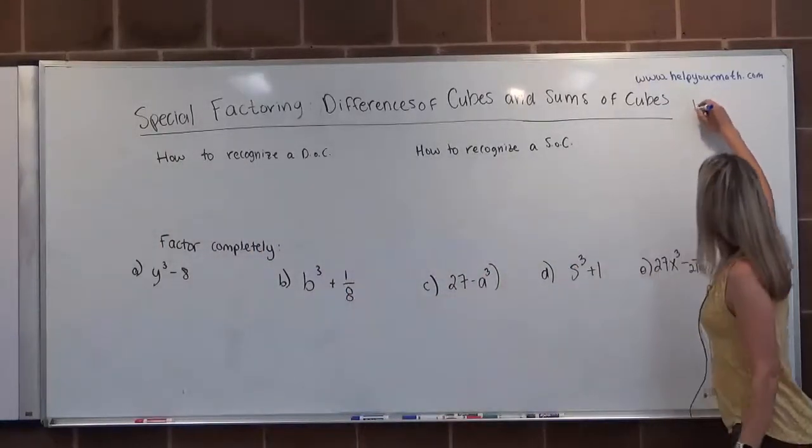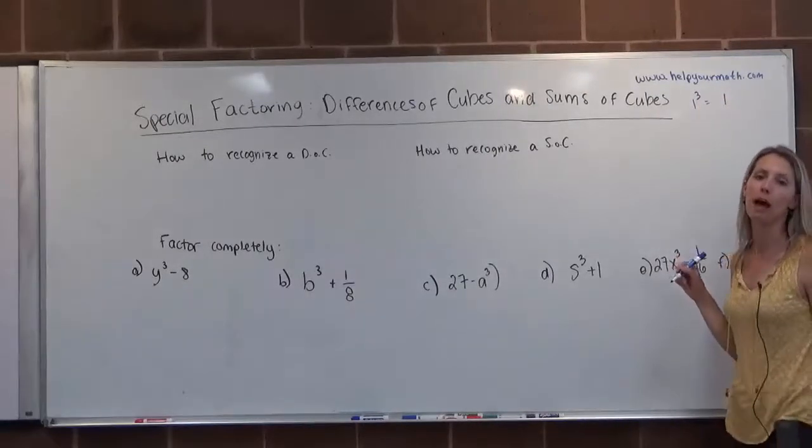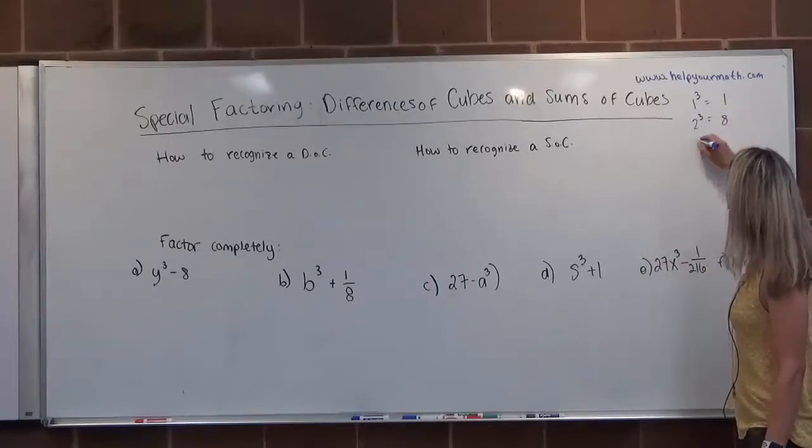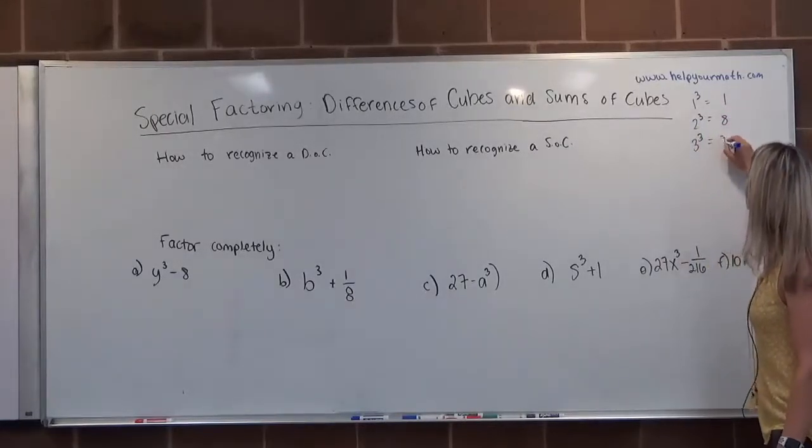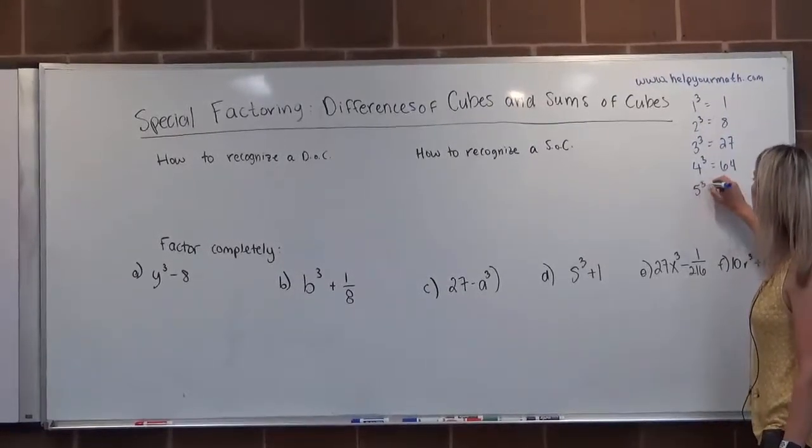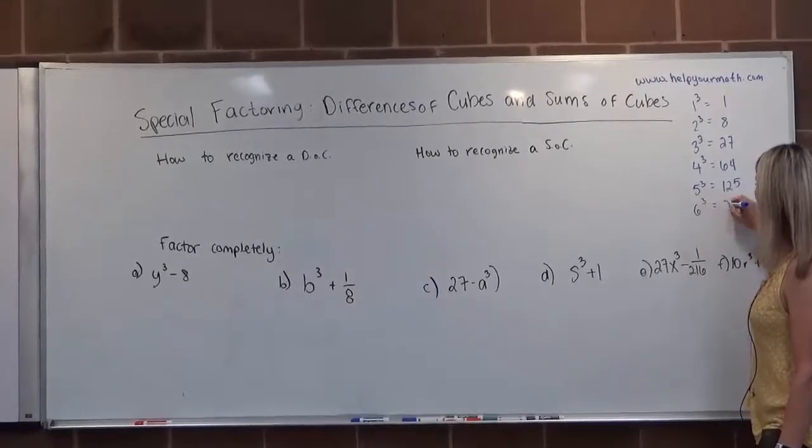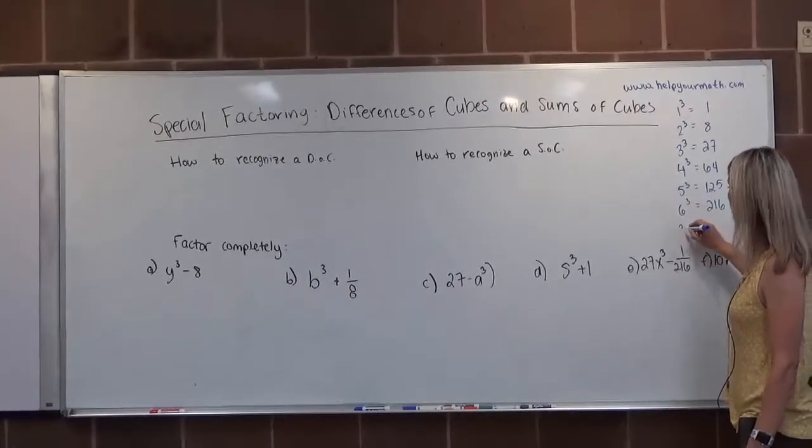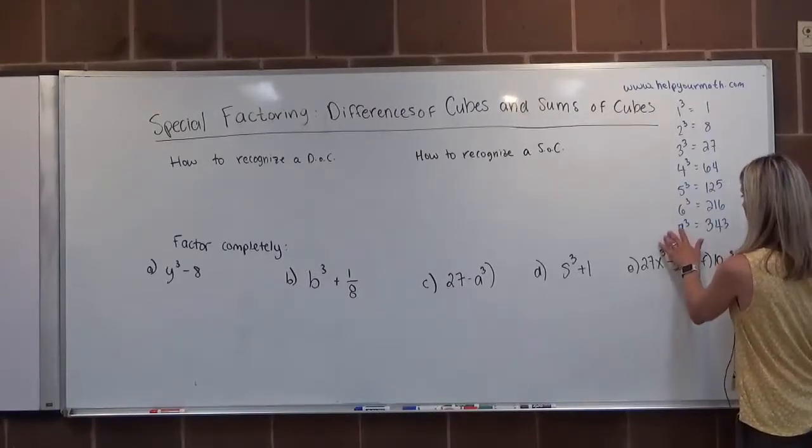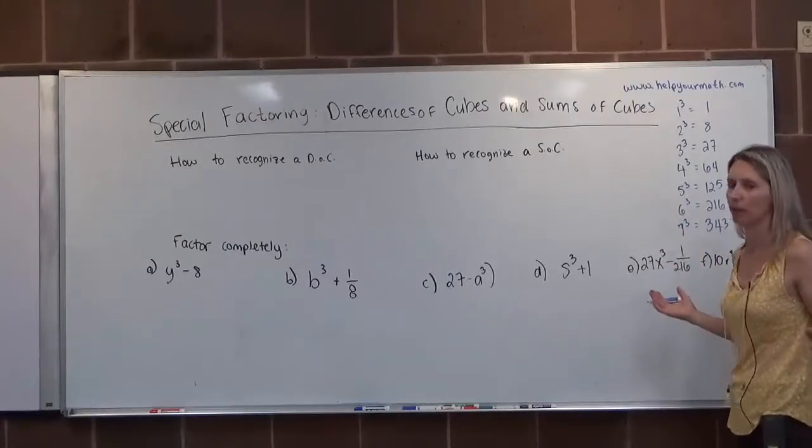1 cubed is 1. This right-hand column will be my perfect cubes. 2 cubed, that's 2 times 2 times 2, which is 8. 3 cubed is 27. 4 cubed is 64. 5 cubed is 125. 6 cubed is 216. 7 cubed is 343. And hopefully, that's as big as we need to get here.